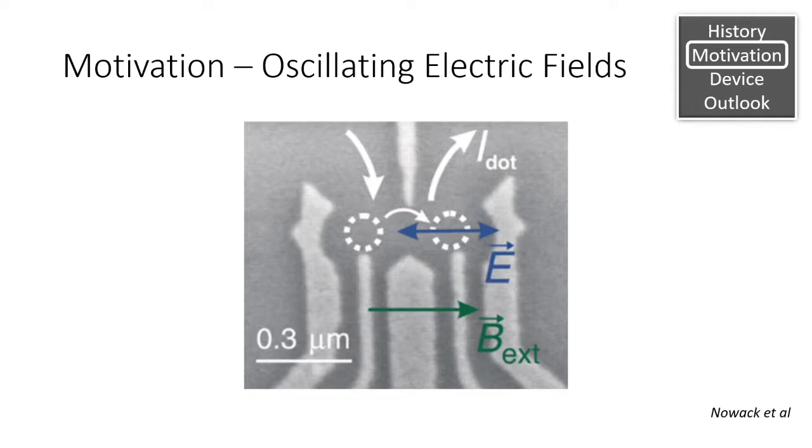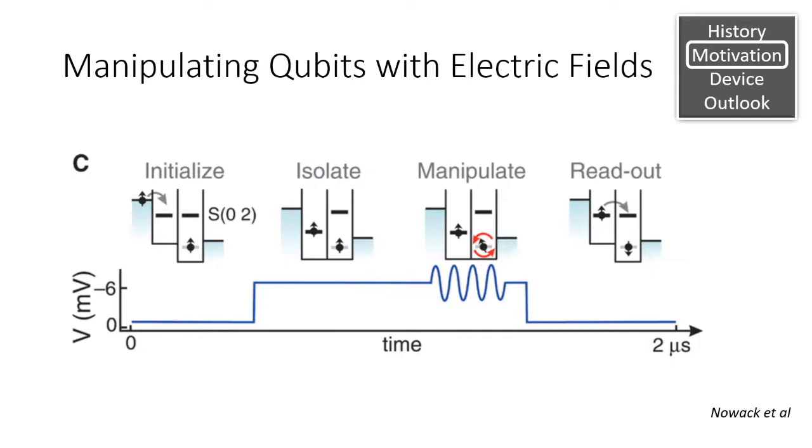This is where spin-orbit qubits come in. Rather than manipulating the qubits with magnetic fields, we can use electric fields to shift the positions of the orbitals of the qubits.